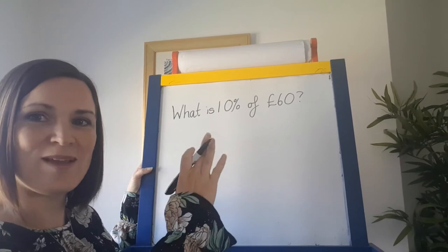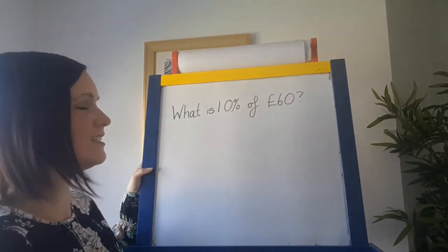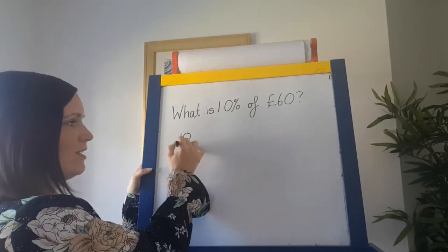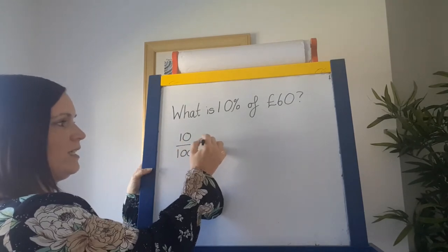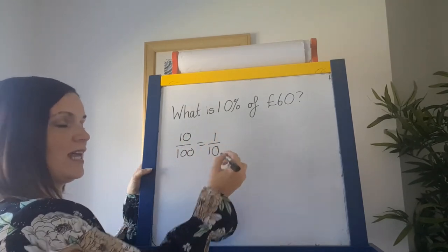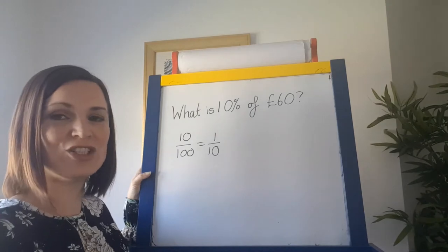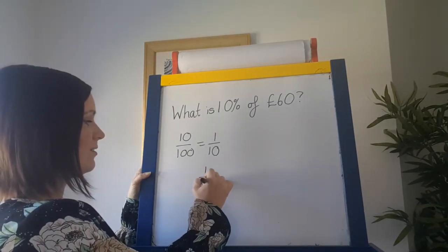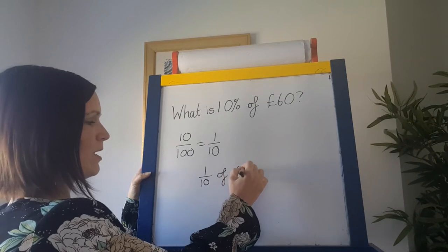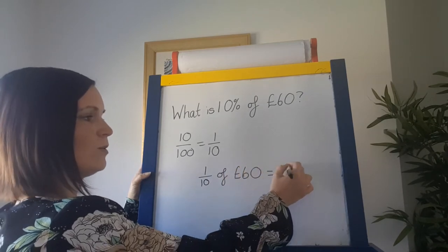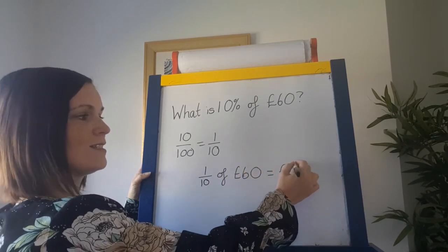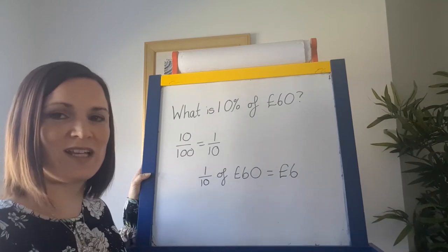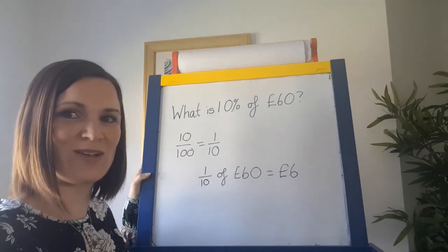Now we have 10% of £60. So 10% is a tenth — 10 over 100 equals one tenth. If you're finding one tenth of something, you divide it by 10. One tenth of £60 equals £6. 60 divided by 10 is £6, so 10% of £60 is £6.